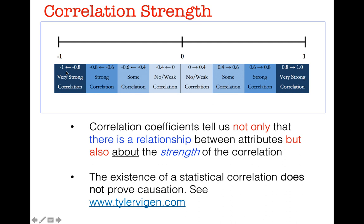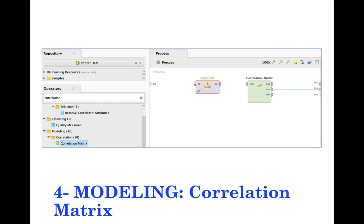Correlation coefficients tell us not only that there is a relationship between attributes but also about the strength of that correlation. Importantly, the existence of a statistical correlation does not prove causation. To bring correlation coefficients into RapidMiner, you use an operator called Correlation Matrix. Link it to your data, connect both the examples output and the matrix (mat) output to the Results panel. When you run RapidMiner after doing this, you'll see the correlation table.